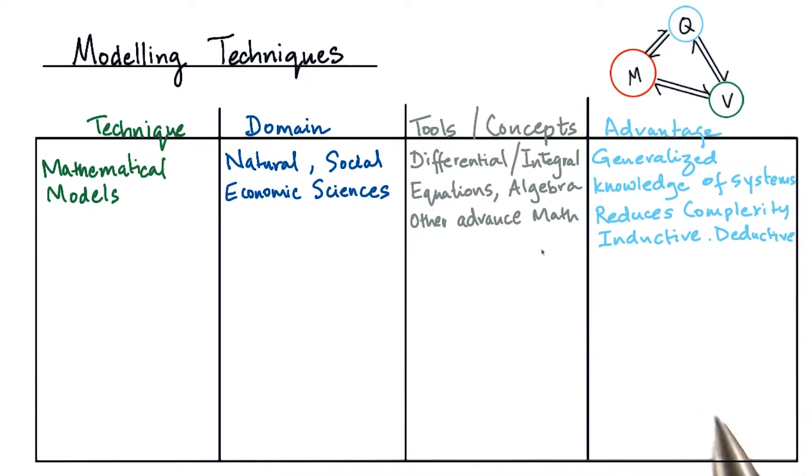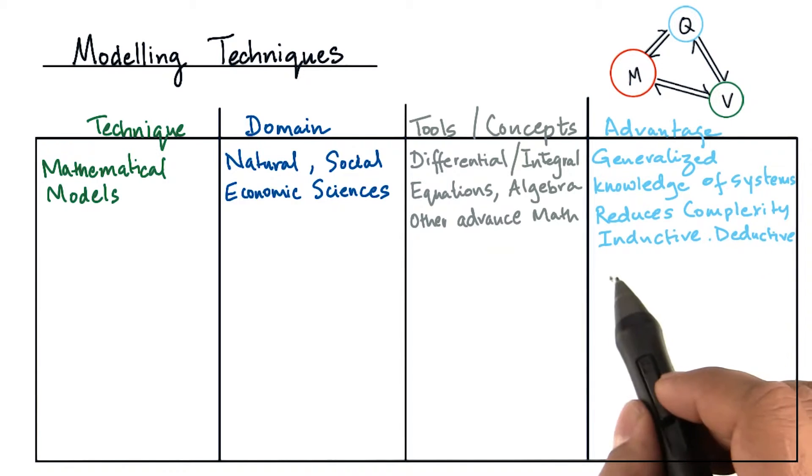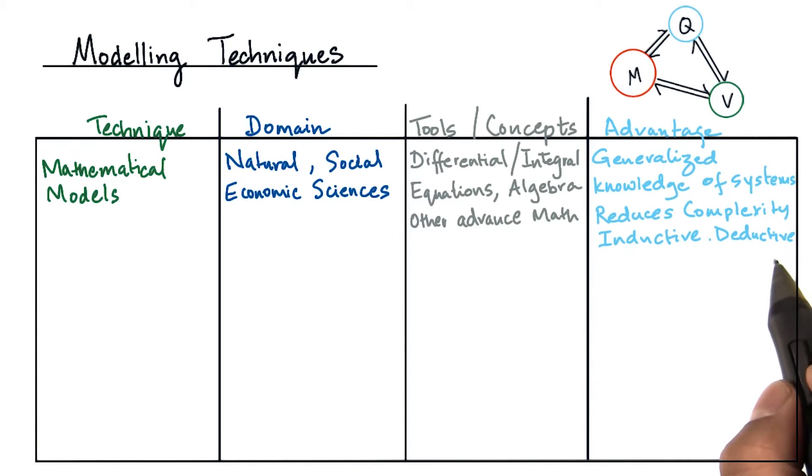The advantages of mathematical models is that they can give generalized knowledge of systems. They also reduce complex phenomena to simple cases, and we can use inductive and deductive reasoning to gain knowledge about our system and the models.